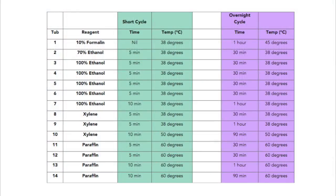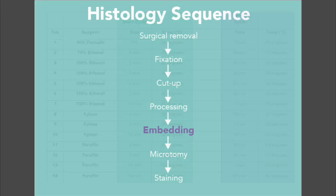Typical processing cycles might look like this. Notice how the cycle times are much longer for the overnight cycle. Processing times can be reduced by heat, agitation, low viscosity of fluids, and decreased pressure. Once processing takes place, the tissue is moved to the next step: embedding.